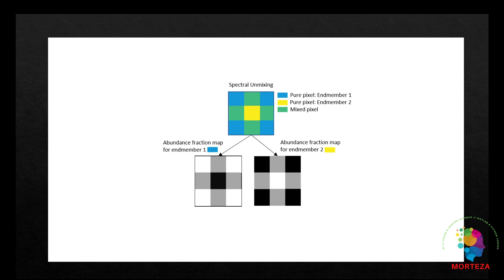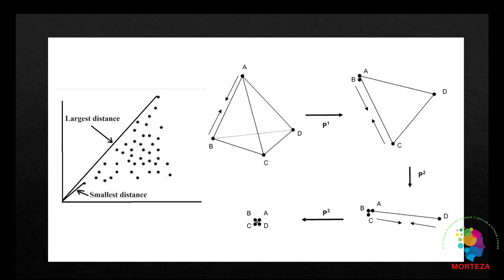In this video, I want to talk about the maximum distance, or MaxD, which is an automated algorithm to find the spectral endmembers from hyperspectral image cubes. This method relies on the idea that the endmembers are assumed to be vertices of the best fitting simplex that encompasses the data.